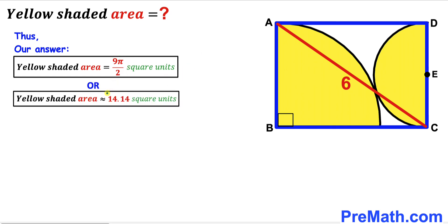The yellow shaded area is 9π/2 square units, which is approximately 14.14 square units. That's our final answer. Thanks for watching, and please don't forget to subscribe to my channel for more exciting videos. Bye!